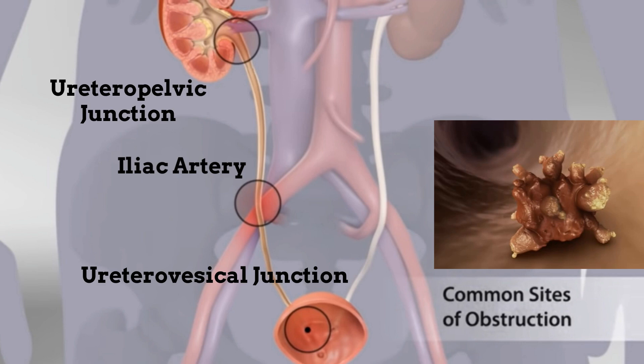Stones below six millimeters can pass through your body over time with the aid of proper medication and other home remedies. Most importantly, these stones should not cause any obstruction or blocking, otherwise medical intervention is required. This does not normally happen with small stones below six millimeters. As we can see here, the common sites of obstruction in the kidney are the ureteropelvic junction, iliac artery, and ureterovesical junction.